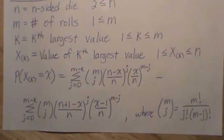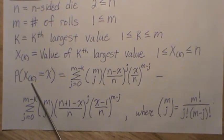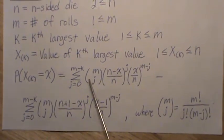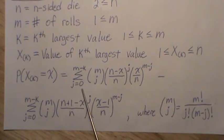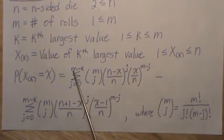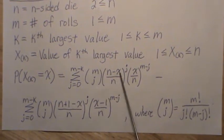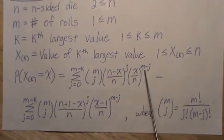And the formula is this. The probability that the kth largest value is x, and remember, x can go from 1 to n, is this sum. So it's the sum from j equals 0 to m minus k of m choose j, (n-x)/n raised to the j, x/n raised to the m minus j,